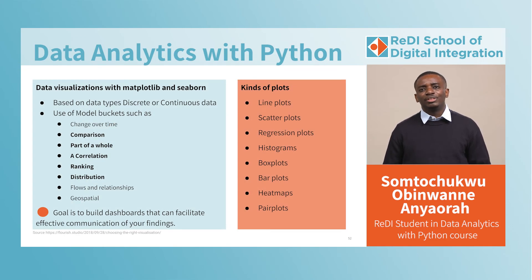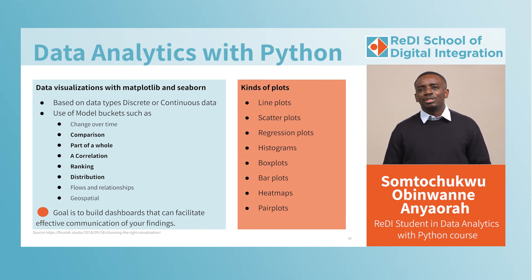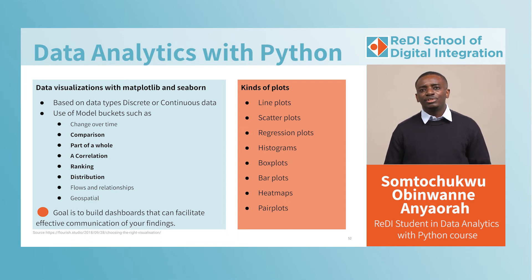To communicate your findings, the best way to do this is to visualize your dataset with the aid of plots. It is also important to understand the type of dataset you have, as this will help you determine the kind of plots to use to best explain your story. For example, a continuous dataset would fit the change-over-time model, and this is best explained with a line plot.